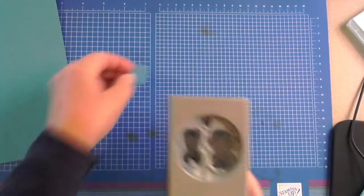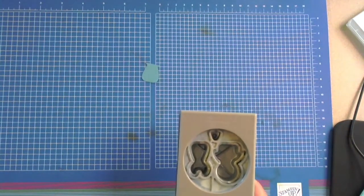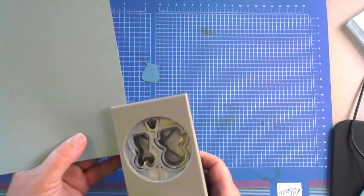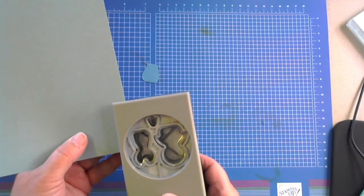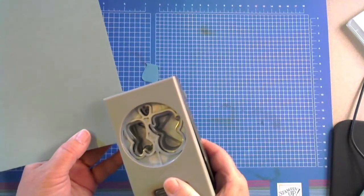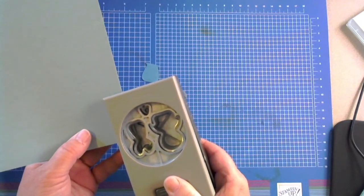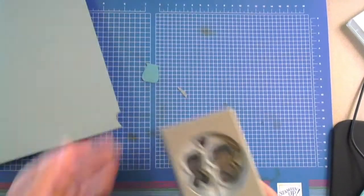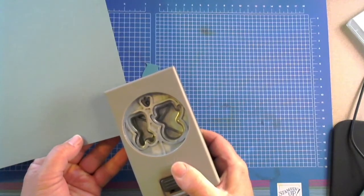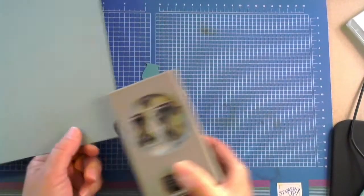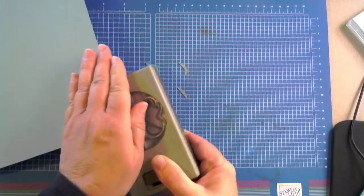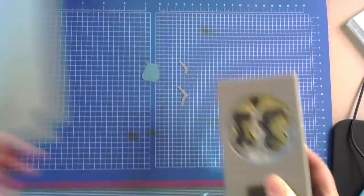And then for our stems we're going to use that same punch, and I'm coming in with some Soft Succulent. I'm just going to take a nip off of the edge of that, so it's going to make kind of a curvy stem. And if you want, when you actually punch it, put your hand over it so you don't lose it like that one.